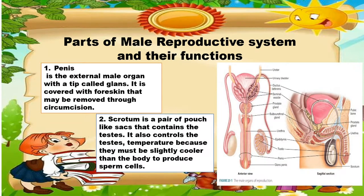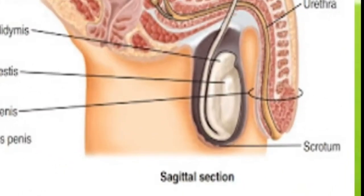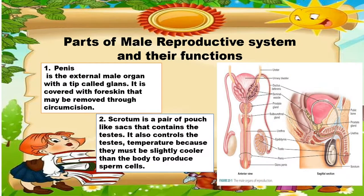The second one is the scrotum. It is a pair of pouch-like sacs that contains the testes. It also controls the testes' temperature, because they must be slightly cooler than the body to produce sperm cells.